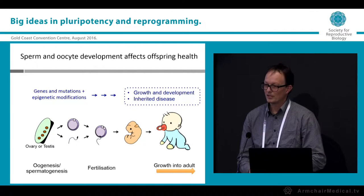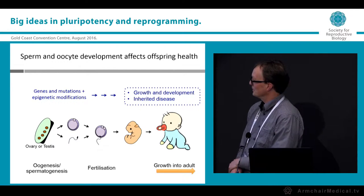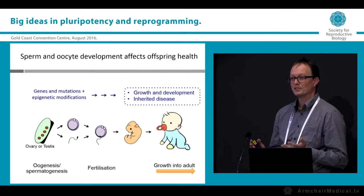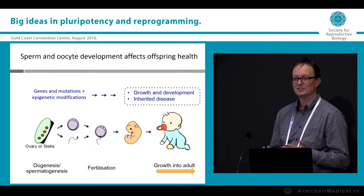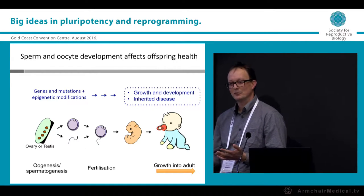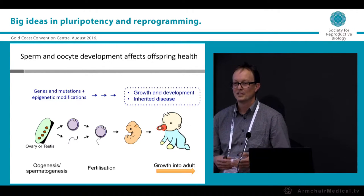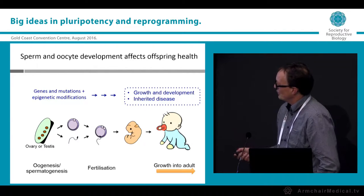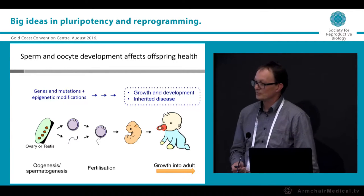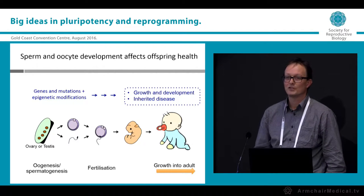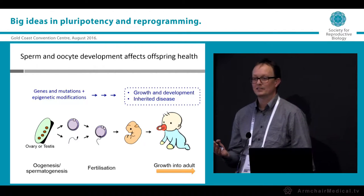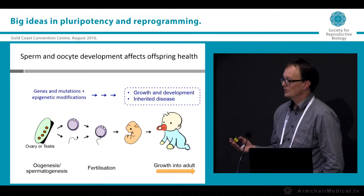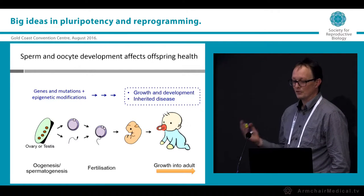Sperm and oocytes transmit genetic information to the offspring, and this genetic information forms a template for the whole of life in the offspring. However, it's perhaps not as widely known that germ cells also transmit epigenetic information from the parents to the offspring, and this information is critical for proper development of the offspring.